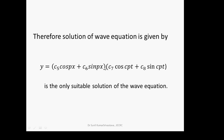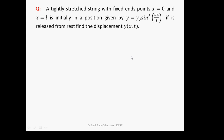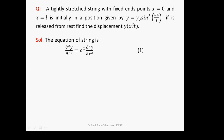Now we discuss an example with boundary and initial conditions. A string of length l has fixed ends at x = 0 and x = l. Initially, the displacement is given by y = y₀ sin(qπx/l) and it is released from rest. Find the displacement. The one-dimensional wave equation is ∂²y/∂t² = c² ∂²y/∂x².